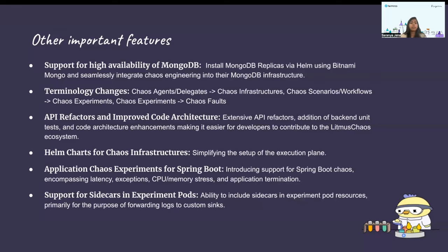Next are terminology changes. We have changed a few terminologies to better reflect their functionality: chaos agents or delegates have been renamed to chaos infrastructures, chaos scenarios or workflows are now referred to as chaos experiments, and chaos experiments are now referred to as chaos faults.